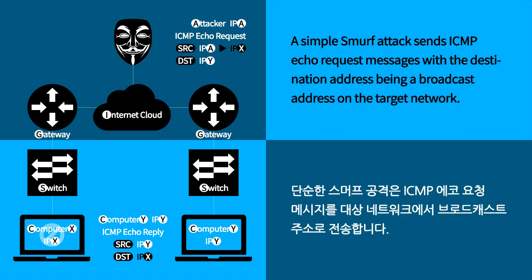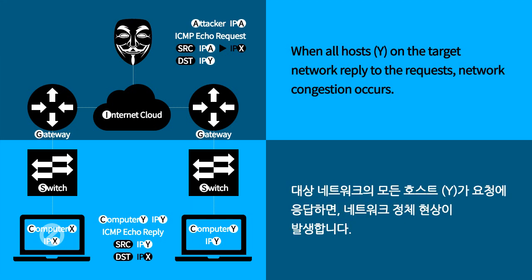A simple smurf attack sends ICMP echo request messages with the destination address being a broadcast address on the target network. When all hosts Y on the target network reply to the request, network congestion occurs.